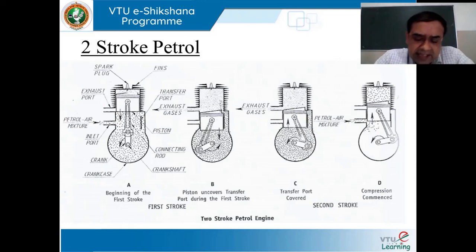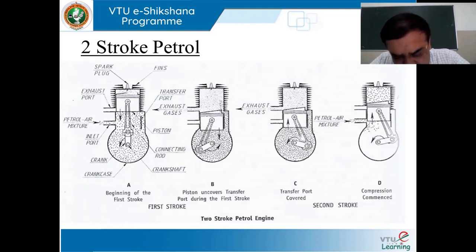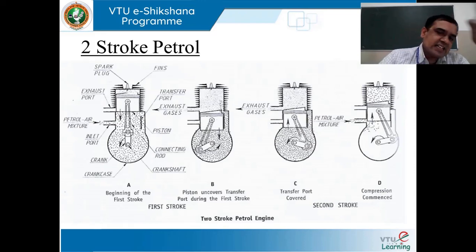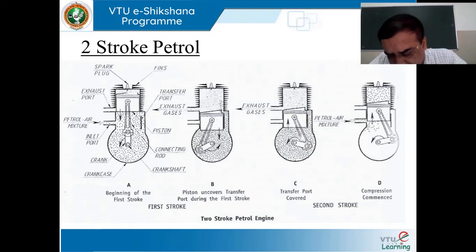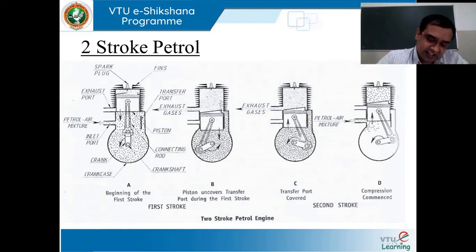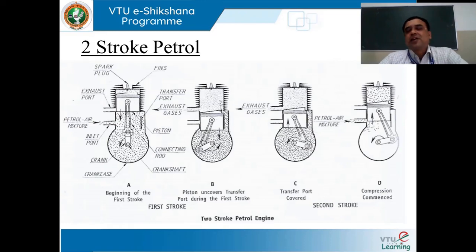Then, when we take the reference of the direction of rotation of the crankshaft: in four-stroke engines, the crankshaft rotates only in a single direction. But when we take the reference of two-stroke engines, the crankshaft can rotate in either direction. That is a very salient point we have to be clearly aware of.